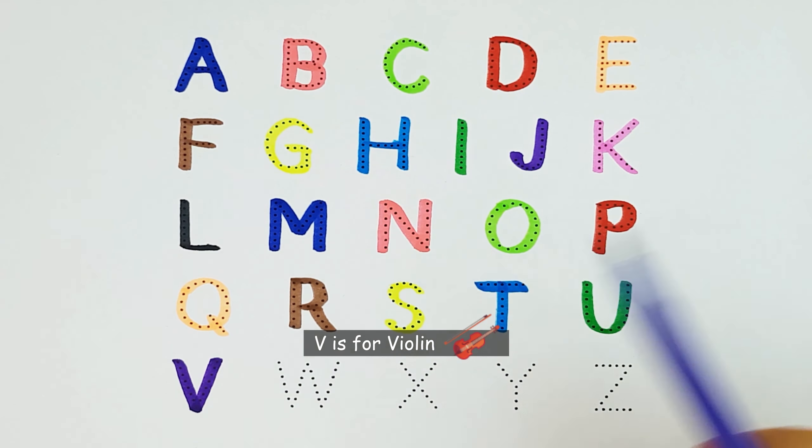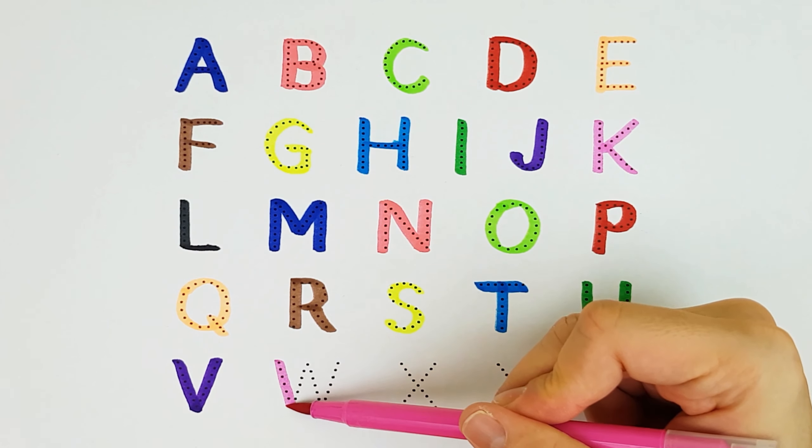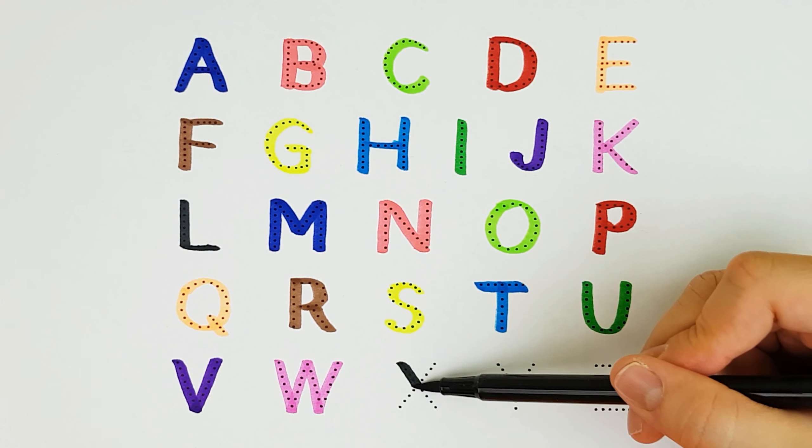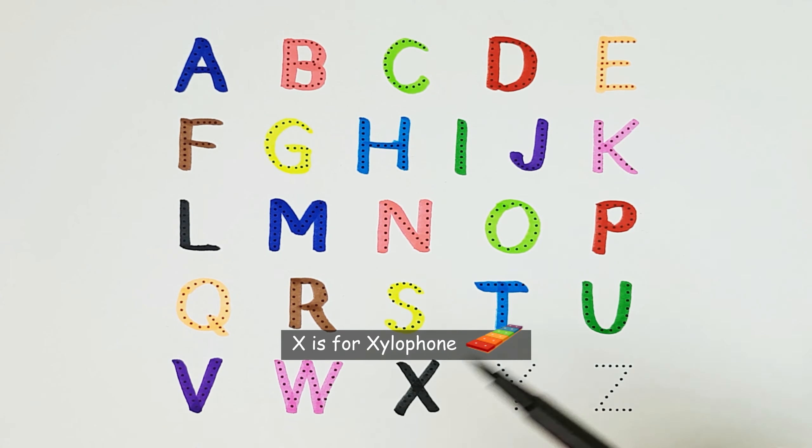V. V is for Violin. V. W. W is for Wizard. W. X. X is for Xylophone. X.